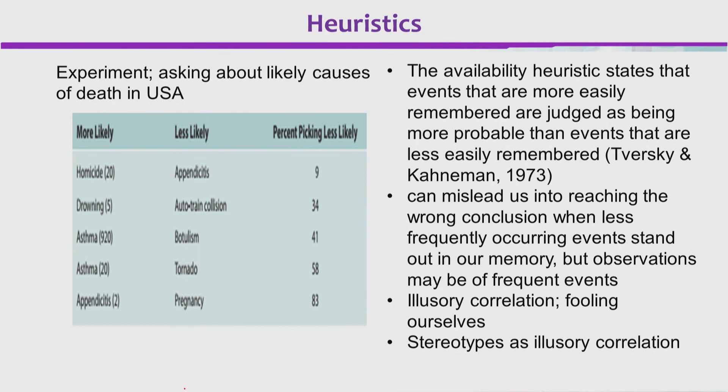The availability heuristic is a type of heuristic that states that those events which are more easily remembered are judged as being more probable than events that are less easily remembered. So jo hume available hota na memory meh, hum us ko zyada judge karte hain ki yeh zyada hone ke imkanaat hain. Iske zariye hum mislead bhi ho sakti hain wrong conclusion ki taraf,